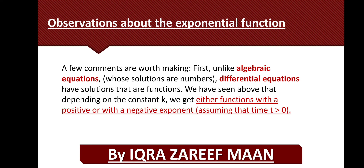Now some comparison with algebraic equations: the solutions of algebraic equations such as quadratic equations are numbers, but the solutions of differential equations are functions. Depending on the constant k — whether it is positive or negative — we get functions with positive or negative exponents. The time t is a scalar quantity and is always a positive value.